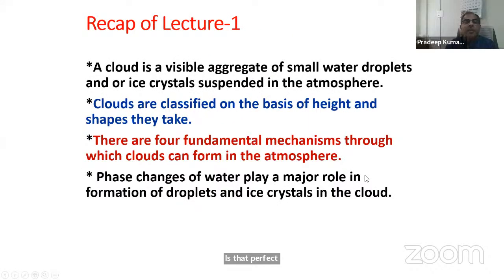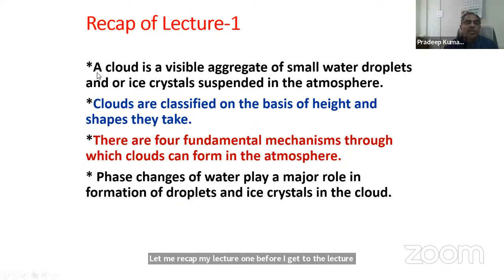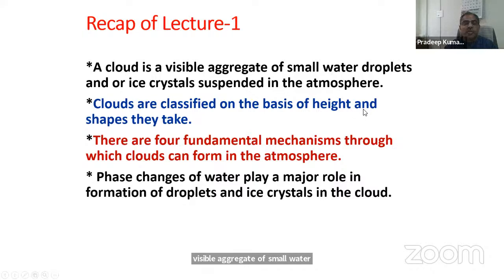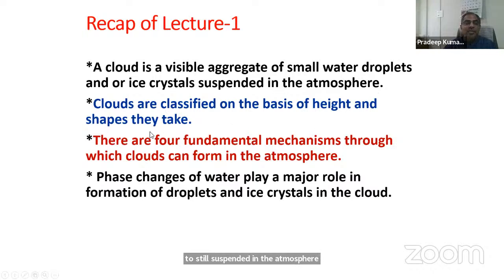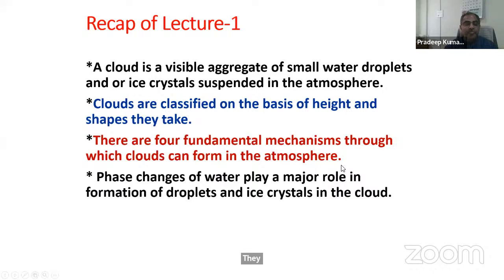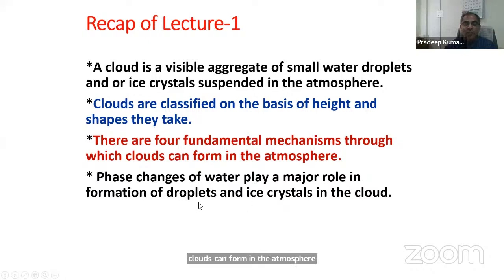Let me recap Lecture 1 before I get to Lecture 2. A cloud is a visible aggregate of small water droplets and/or ice crystals suspended in the atmosphere. Clouds are classified on the basis of height and shape. There are four fundamental mechanisms through which clouds can form in the atmosphere. Phase changes of water play a major role in the formation of droplets and ice crystals in the cloud.